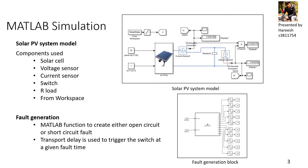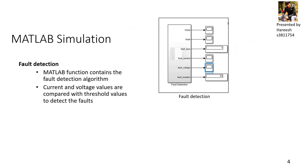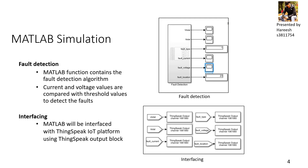A MATLAB function block including a fault selection algorithm is used to generate either an open circuit or a short circuit fault. Another MATLAB function block is used for fault detection, where panel voltage and current are compared with threshold values to detect the fault. The output from the fault detection block is interfaced with the IoT ThingSpeak channel using a ThingSpeak output block.